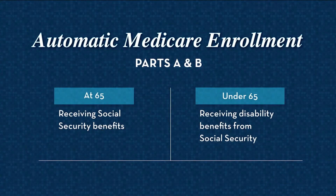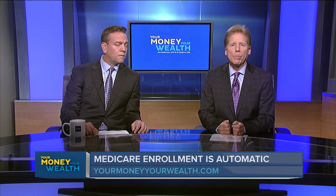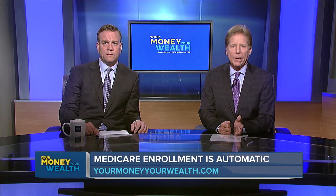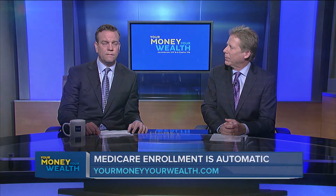So let's try to make it more simple and talk about, first of all, how you enroll. For many of you, it's automatic enrollment, and that's at age 65. If you're already receiving Social Security benefits, you should get that Medicare card in the mail about three months before your birthday month. If you're under 65 and receiving disability from Social Security, that would be another time where you'd be automatically enrolled. So if you meet either of those two things, you're going to be automatically enrolled.